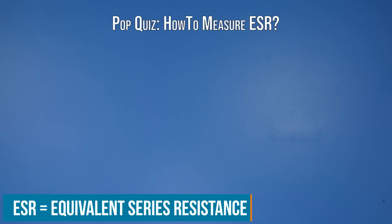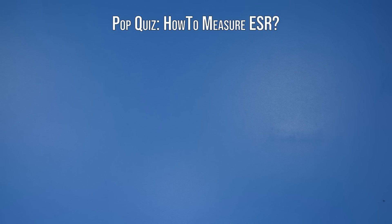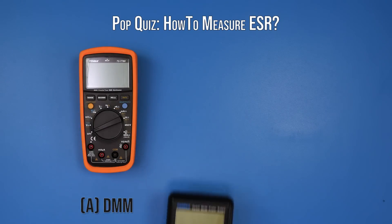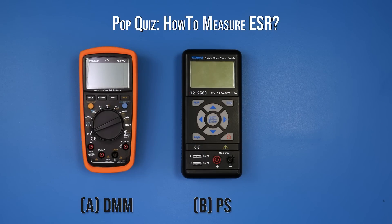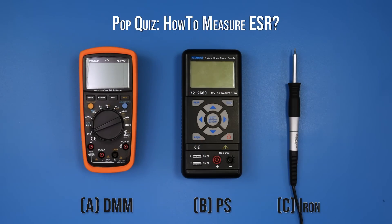I hope you brought a pencil because I'm kicking this episode off with a pop quiz. If you want to measure a capacitor's ESR, which of the following tools could you use? A, a multimeter; B, a power supply; or C, a soldering iron? And the answer is C, soldering iron. Thanks for watching! Okay, obviously that isn't the case.